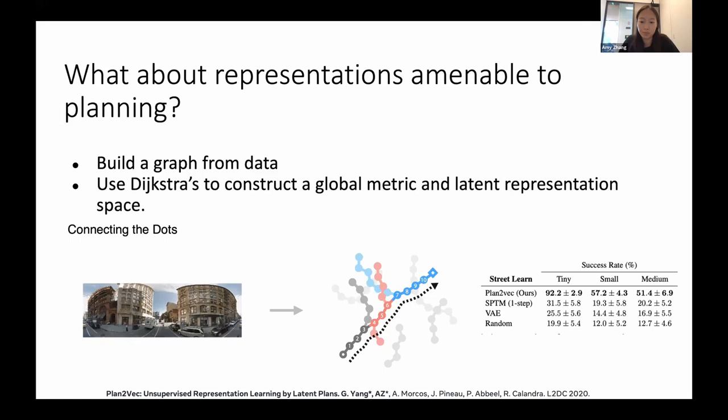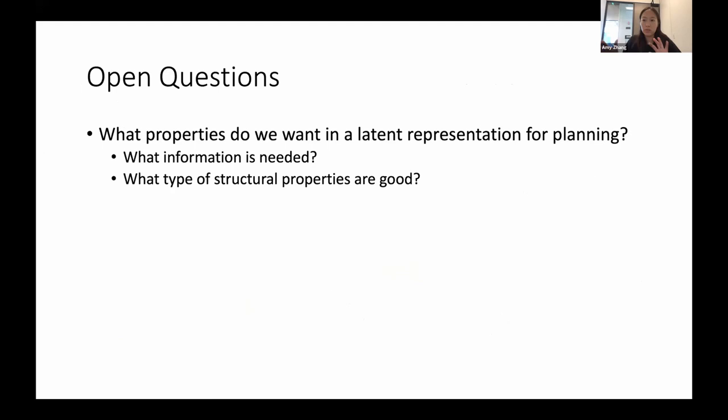If you have access to this offline data set—here we were using StreetLearn, which was a dataset created by DeepMind that uses Street View images—we can build a graph from these Street View images and use Dijkstra's to construct this global metric and learn a latent representation where how far away the shortest path is between these two states corresponds to a distance in this latent representation space. There are similar other methods out there that use these kinds of graphs over replay buffers. But we show that our method is able to exhibit much better performance and can generalize to unseen combinations of start and goal states.